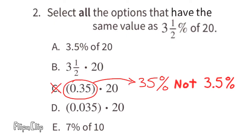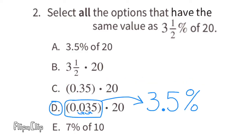Option C: 35 hundredths times 20. That's equivalent to 35 percent of 20, not 3.5 percent of 20, so I would not select C. Option D: 0.035 times 20. That's equivalent to 3.5 percent of 20, so I would select D.